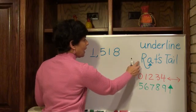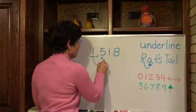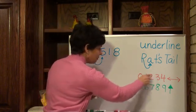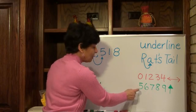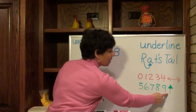I underlined it. Now I need the rat's tail. My rat's tail goes to the 5. I'm going to look for the 5 over here now. Now I don't see a 5 there. It's right here. There's a 5 in the green and it tells the underlined number to go up.